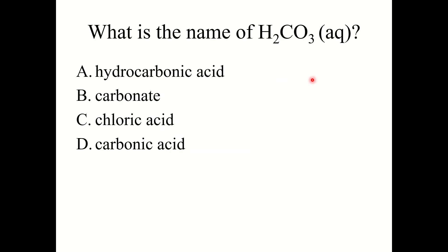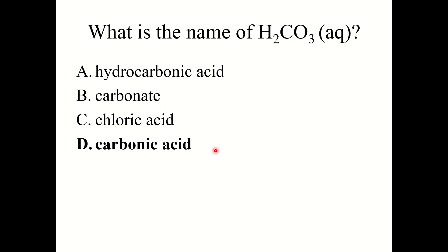Quick knowledge check: what is the name of H2CO3? You may need to use your polyatomic ion sheet. The correct answer is D: carbonic acid. CO3²⁻ is carbonate — change the -ate to -ic and add acid: carbonic acid.